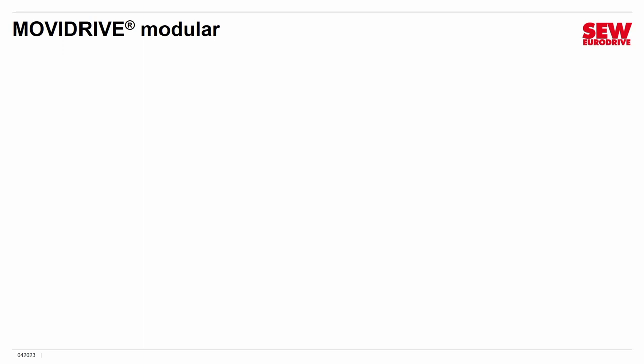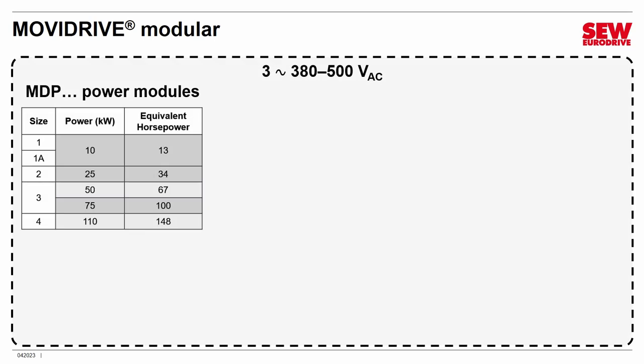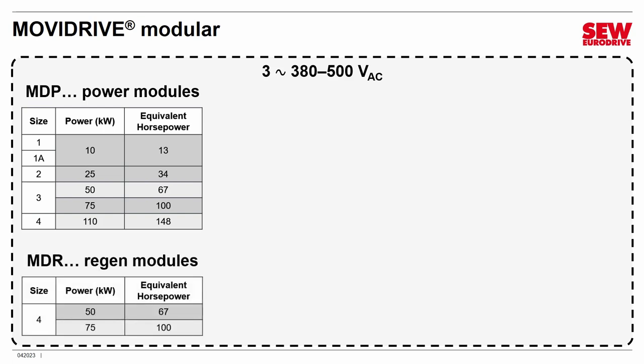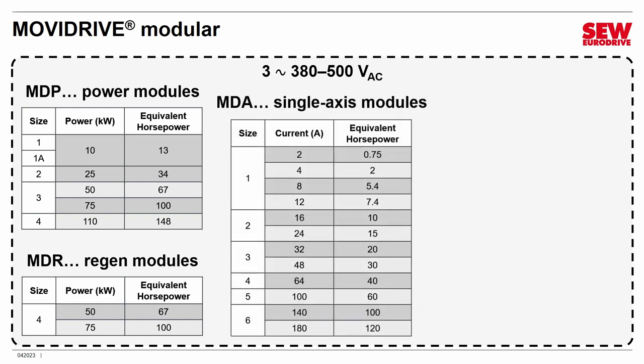MoviDrive Modular is somewhat different because you have the axis modules and the power supplies, so they each have their own sets of ratings. The power supply modules are all three-phase at 380 to 500 volts, coming in sizes from essentially 10 kilowatts to 110 — I've supplied the approximate equivalent horsepower as well. The single-axis modules range from size 1 to 6, handling from 2 amperes to 180, with equivalent horsepower from about three-quarters up to 120, so you can control motors from fairly small to pretty good-sized ones.